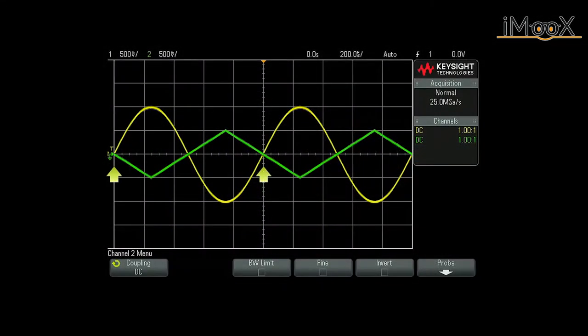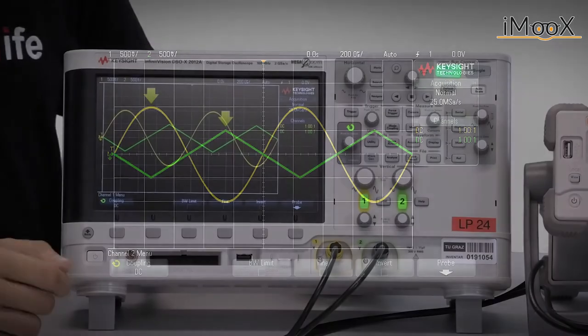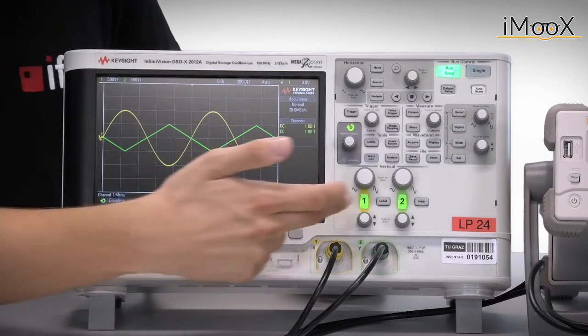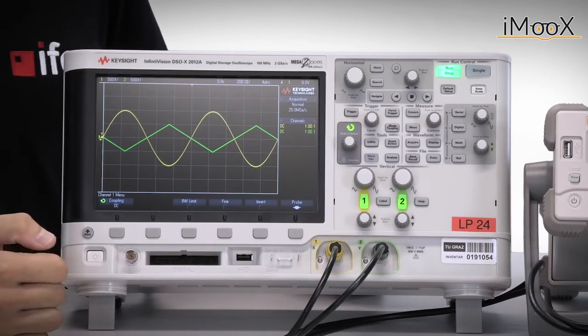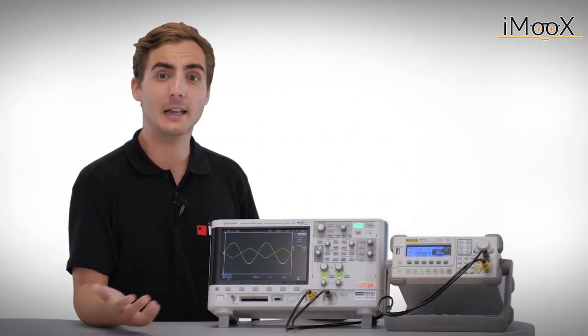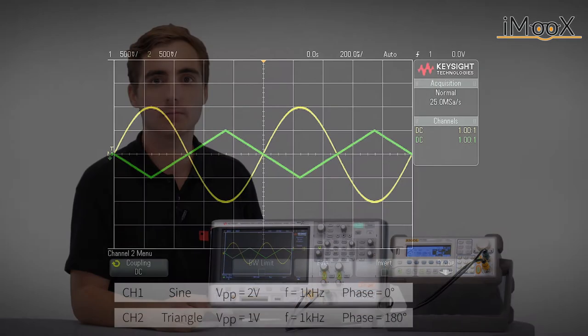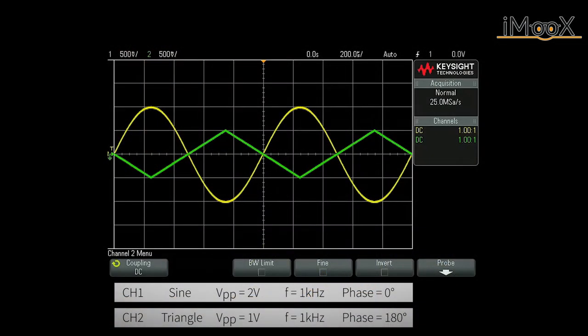Obviously, the periods or the frequencies are equal and the signal peaks differ by a factor of 2. The channels can also be disabled and enabled by pushing the according channel buttons. This comes in handy, especially for scopes with even more channels. Before, we have compared the two signals with respect to period and the relative amplitude. But now the question arises, how could we obtain and measure absolute values from the plot?